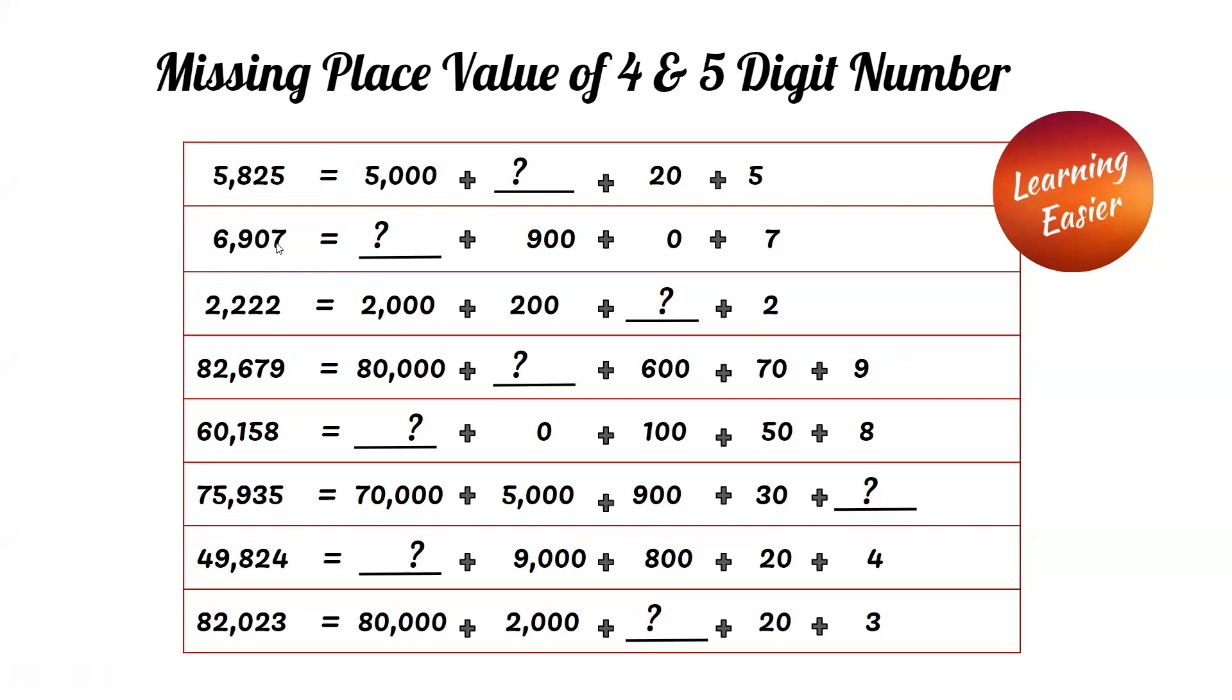6,907. The six in the thousands place is 6,000, so 6,000 is the answer. 2,222. The two in the tens place has a value of 20, so 20 is the correct answer.